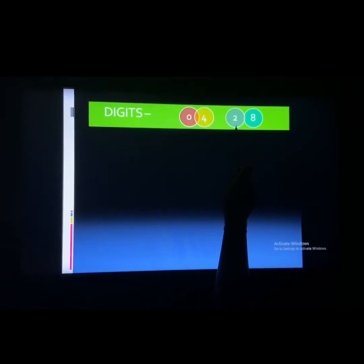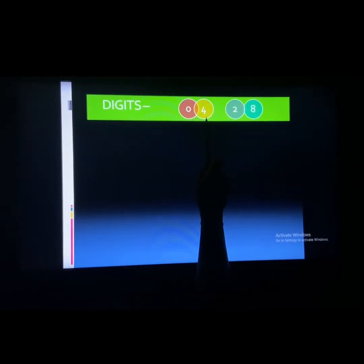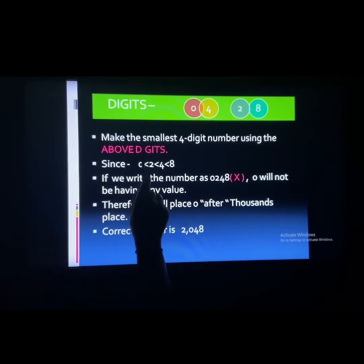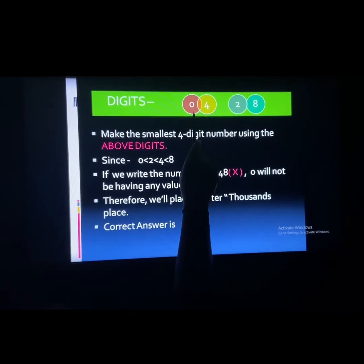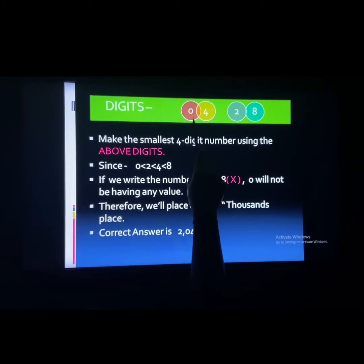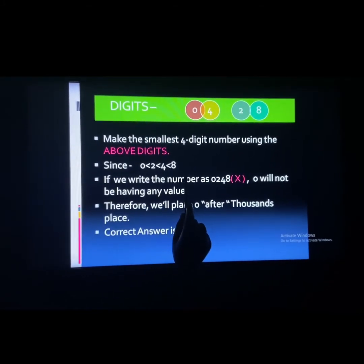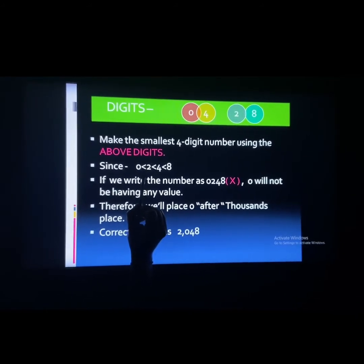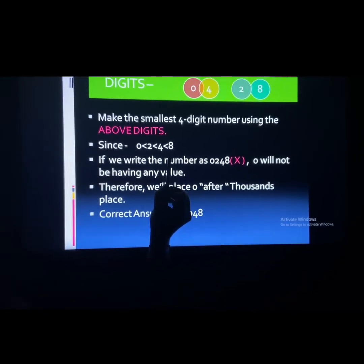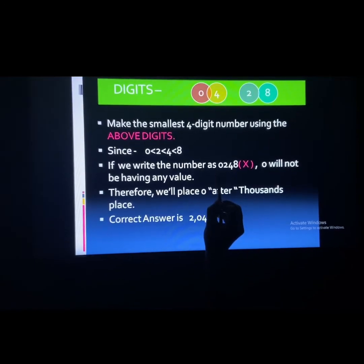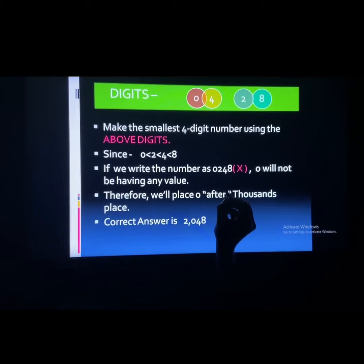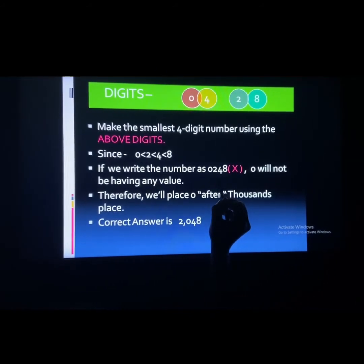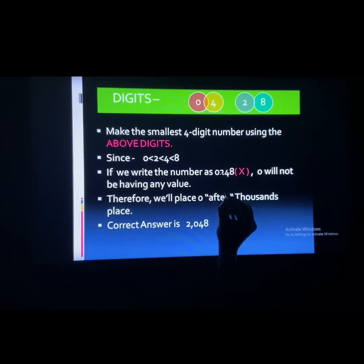We have 4 digits: 0, 4, 2, 8, and we have to arrange them to make the smallest digit number. Digit 0 is present here, and since 0 is the smallest among all, we will still not place 0 at the start. In ascending order: 0 is less than 2, 2 is less than 4, and 4 is less than 8. But if you write 0248, we would read that number as 248 — meaning 0 is not having any value.